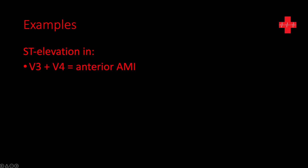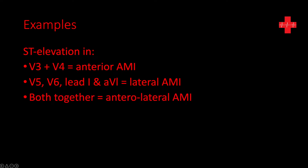Keeping the SALI model in mind: if there's ST elevation in V3 and V4, using the SALI acronym — septal is V1/V2, anterior is V3/V4, lateral is V5/V6/1/AVL, inferior is 2/3/AVF — we know that V3 and V4 elevation indicates an anterior AMI. If it is V5, V6, lead 1, and AVL, that's a lateral AMI, because that lines up with the L in SALI. If we had both together — V3, V4, V5, V6, lead 1, and AVL — you would have an anterolateral AMI, meaning it involves both the front and the side sections.